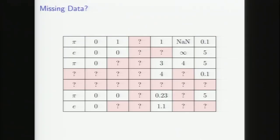So what do I mean by missing data? We've got a nice tabular dataset and there's a bunch of question marks, or maybe NAs, or maybe negative ones mean that data is missing. One option would be to do what's called a complete case analysis, which is when any example in your dataset that has a missing value, you just remove from the dataset.